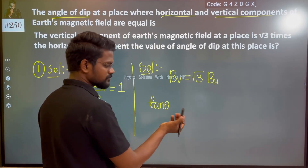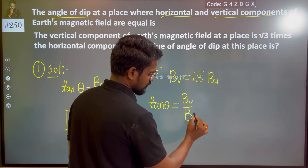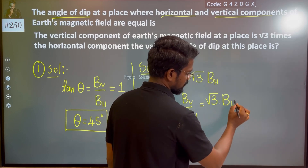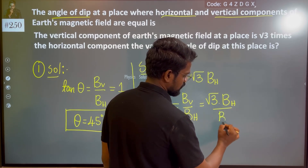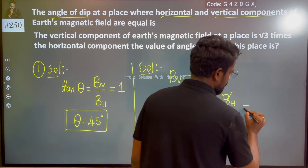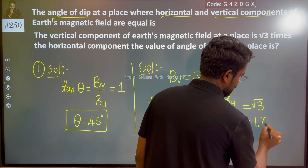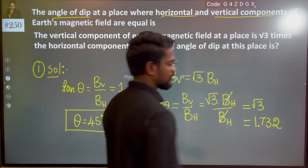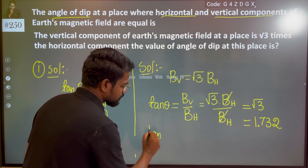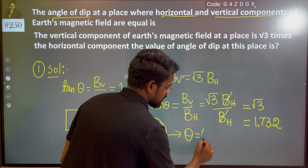Tan Theta equals Vertical Component divided by Horizontal Component. The Vertical Component is root 3 times the Horizontal Component, divided by the Horizontal Component. Horizontal cancels out, so Tan Theta equals root 3, whose value is 1.732. Tan of what angle equals 1.732? That is Tan 60 degrees. So the Angle of Dip, Theta, is 60 degrees.